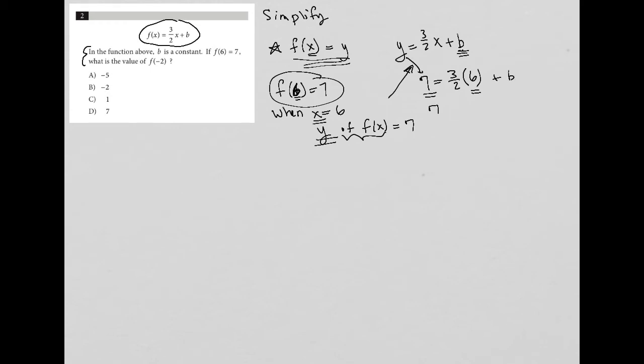When I simplify this, I have seven equals three over two times six over one plus b. Seven equals eighteen over two plus b, seven equals nine plus b. We subtract nine from both sides, leaving me with negative two equals b.